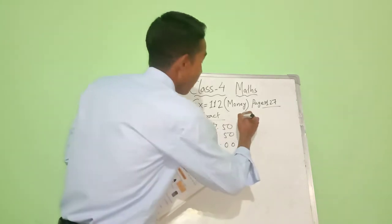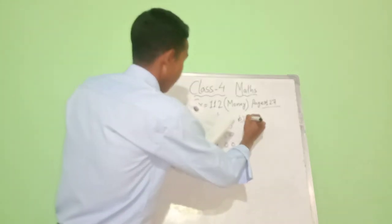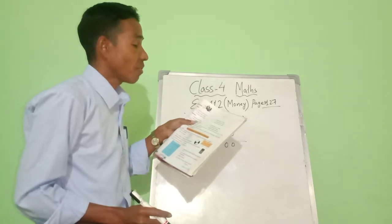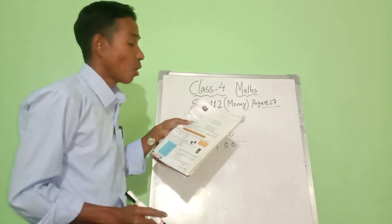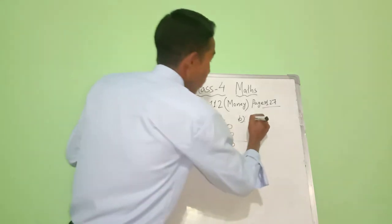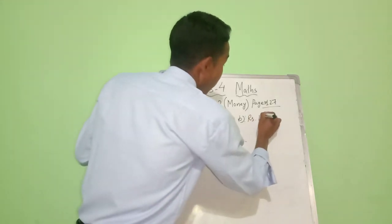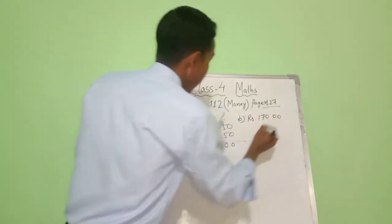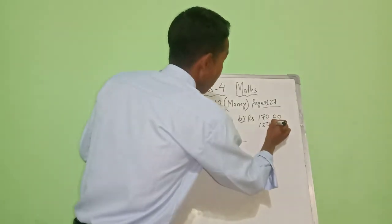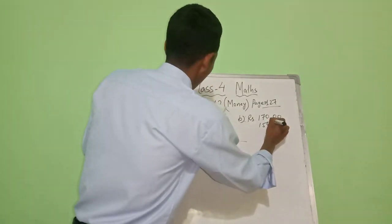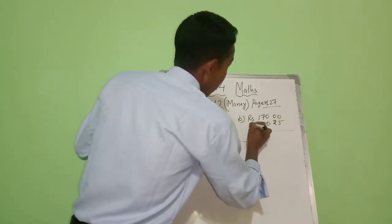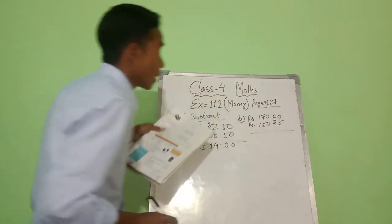Now number b: we have 150 rupees 25 paise to deduct from 170 rupees. Write 170 rupees on top, and then deduct 150 rupees 25 paise from it.